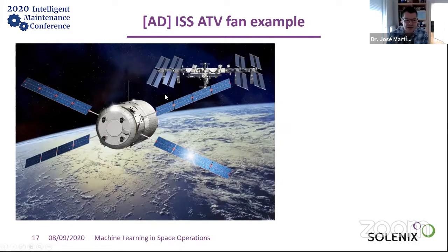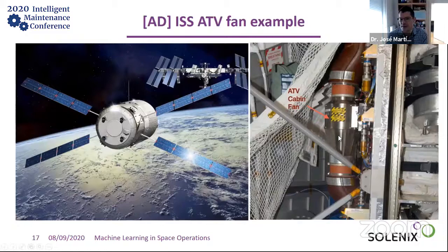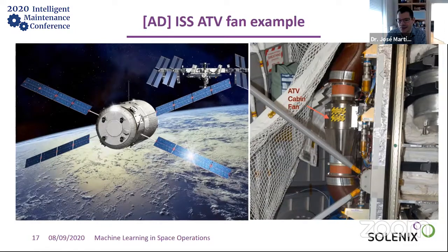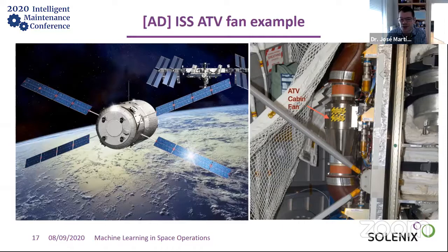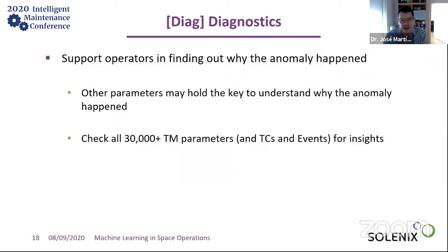A more compelling example is anomaly detection on the International Space Station. The ATV — Automated Transfer Vehicle — brings oxygen, food, and water to the astronauts. Inside the ATV there is a fan that mixes the oxygen, because humans cannot breathe pure oxygen. The fan broke, and they asked if we could have detected it. We ran the data and said yes — but the interesting thing is we also discovered that one week before the failure, there were unusual particle concentrations in the smoke detectors. That's a signature of the fan not working properly, revealing an unintended sensor for fan diagnostics.